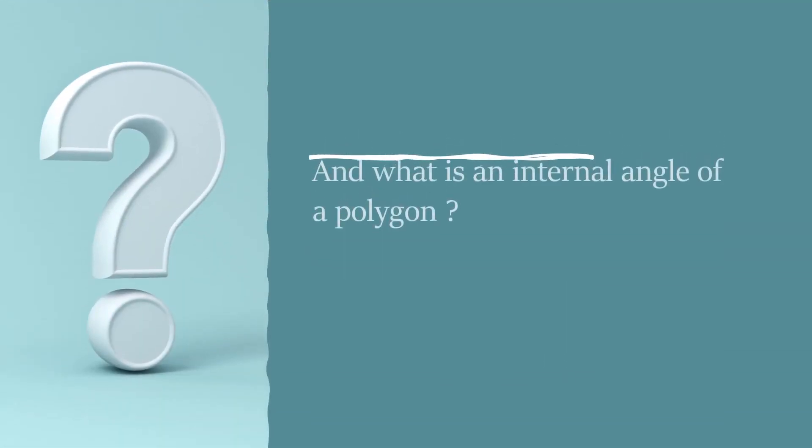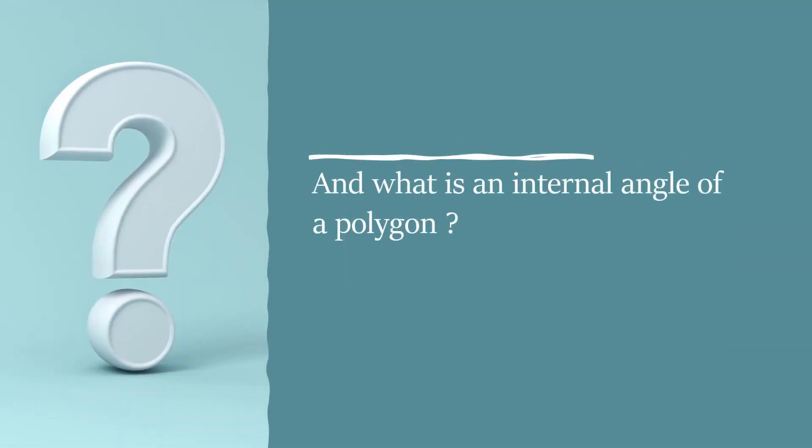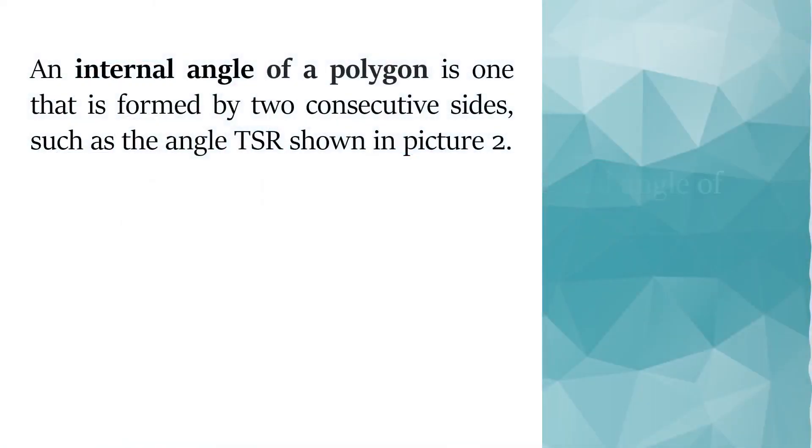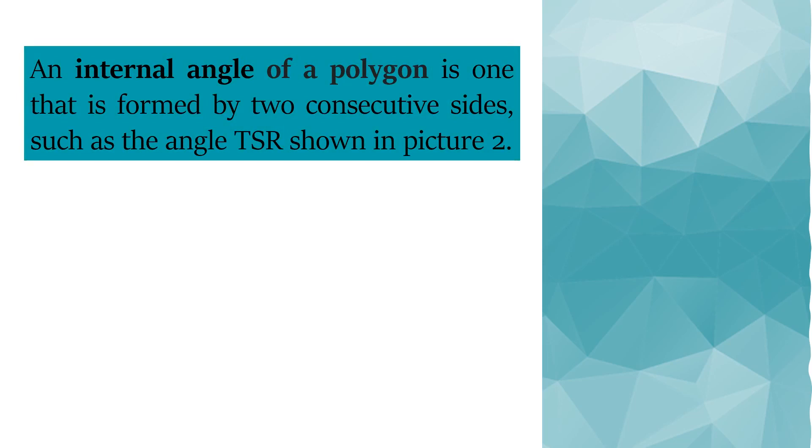And what is an internal angle of a polygon? An internal angle of a polygon is one that is formed by two consecutive sides, such as the angle TSR shown in picture 2.